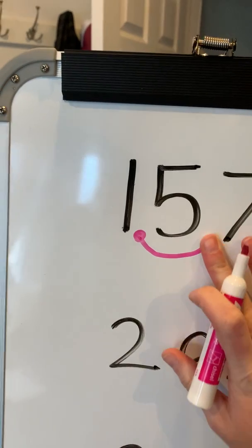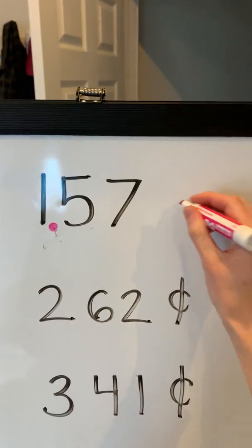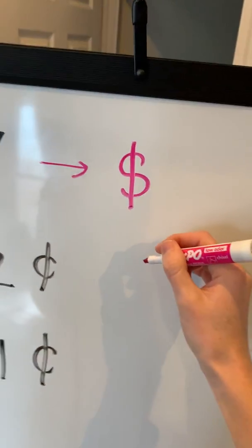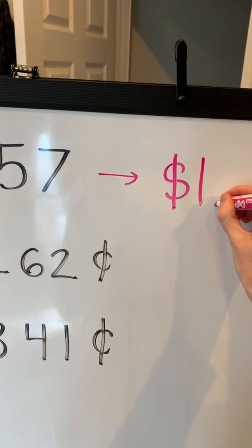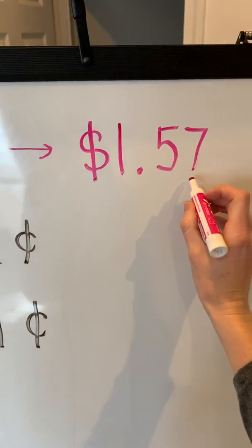And then you get to take off the cent sign, take off that line, and that dot becomes your new dot for dollar sign, which is an S with a line through it. You can put two lines if you want. 1.57, $1.57.